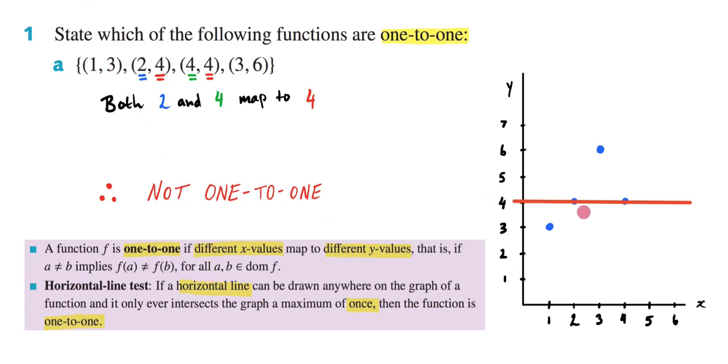And this is the exact same logic as what we saw up here. I'm going to have two different x values. So here will be 2, 4. And here will be 4, 4. So I have two different x values yielding the same y value. And that is not what a one-to-one function is.